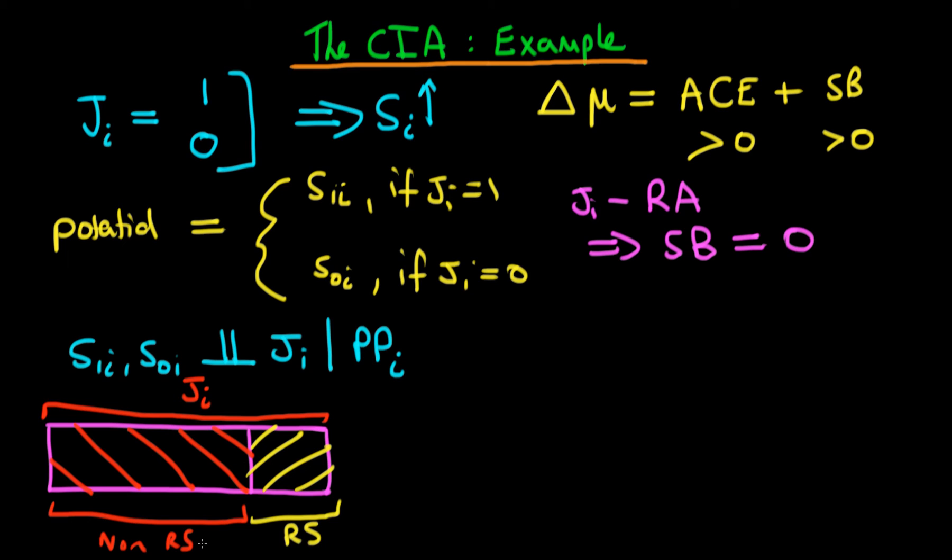And perhaps once we remove that non-randomly selected part of Ji, which is due to past performance, then what we'll be left with is a purely randomly selected part of Ji. And that will then allow us to evaluate some sort of average causal effect.